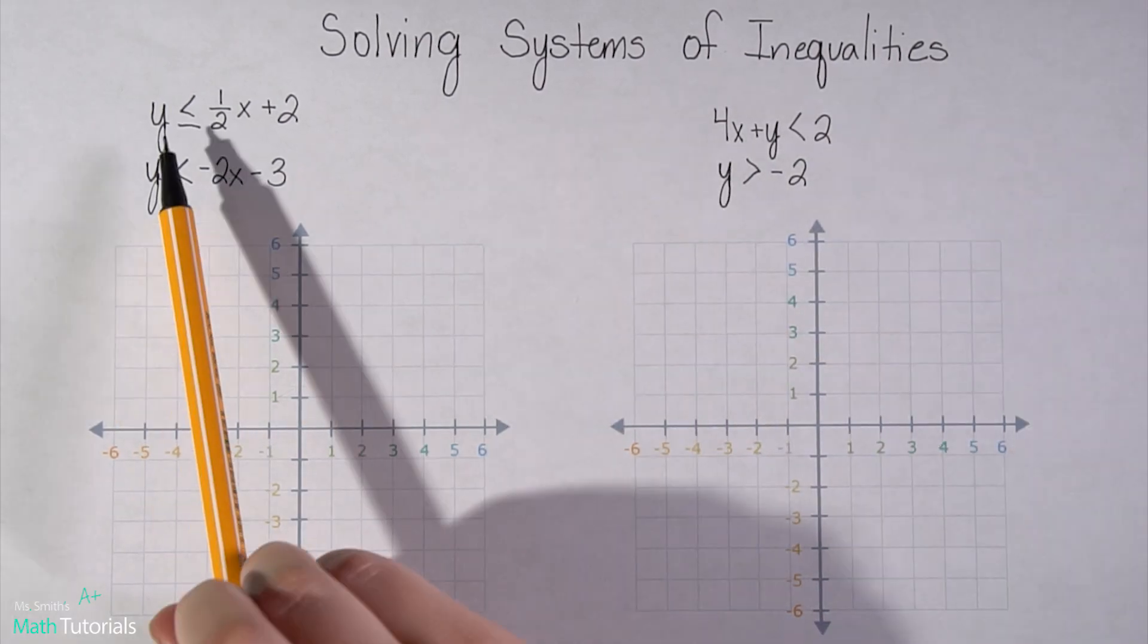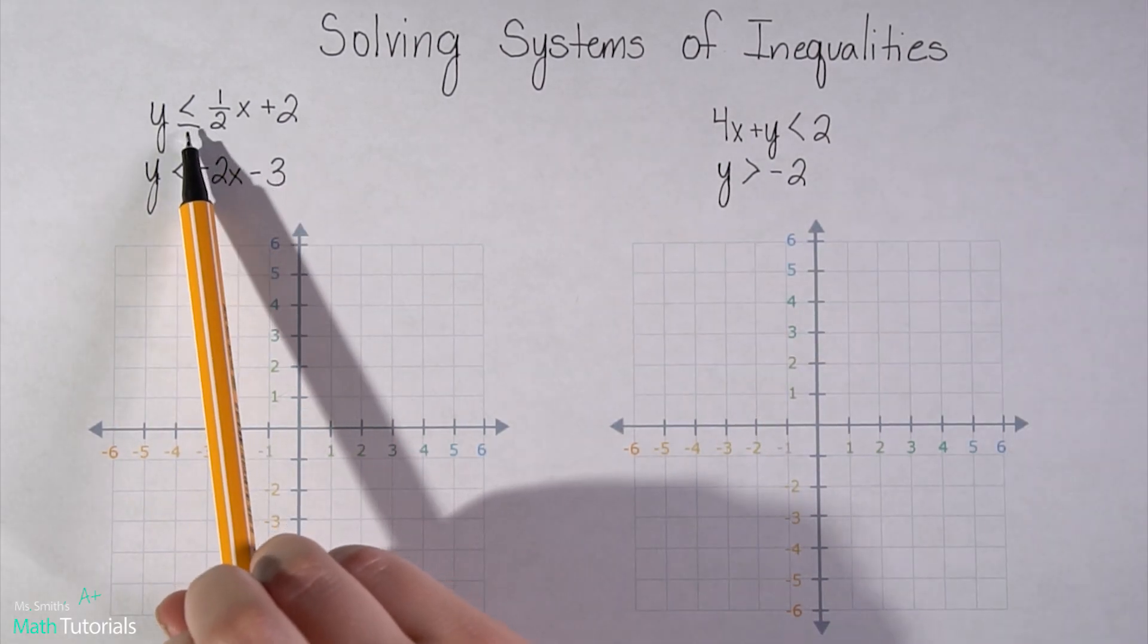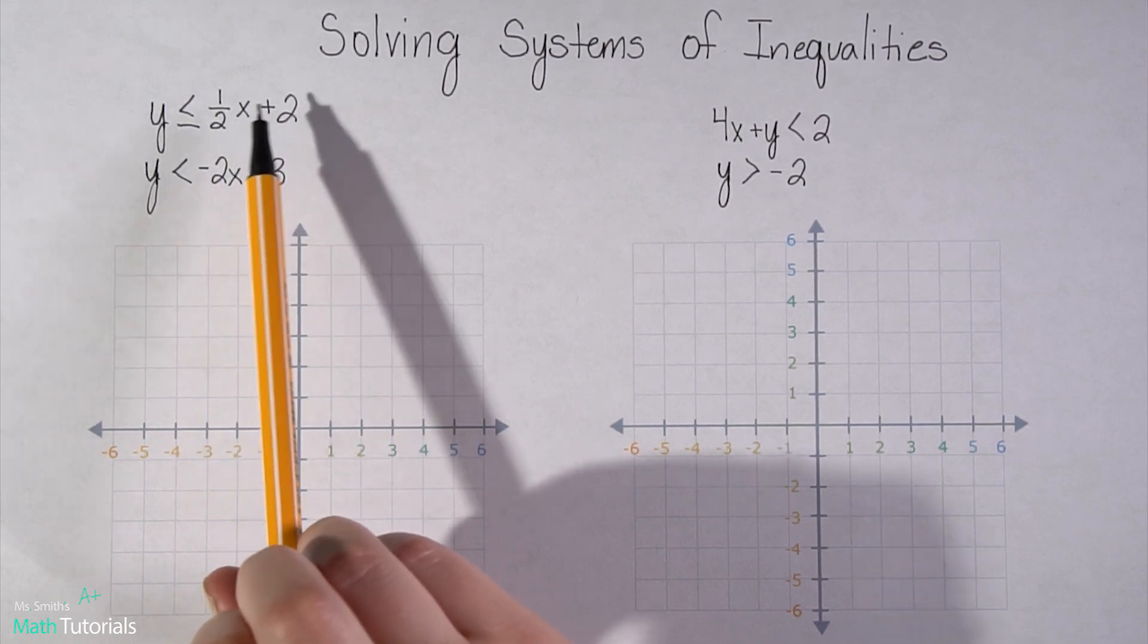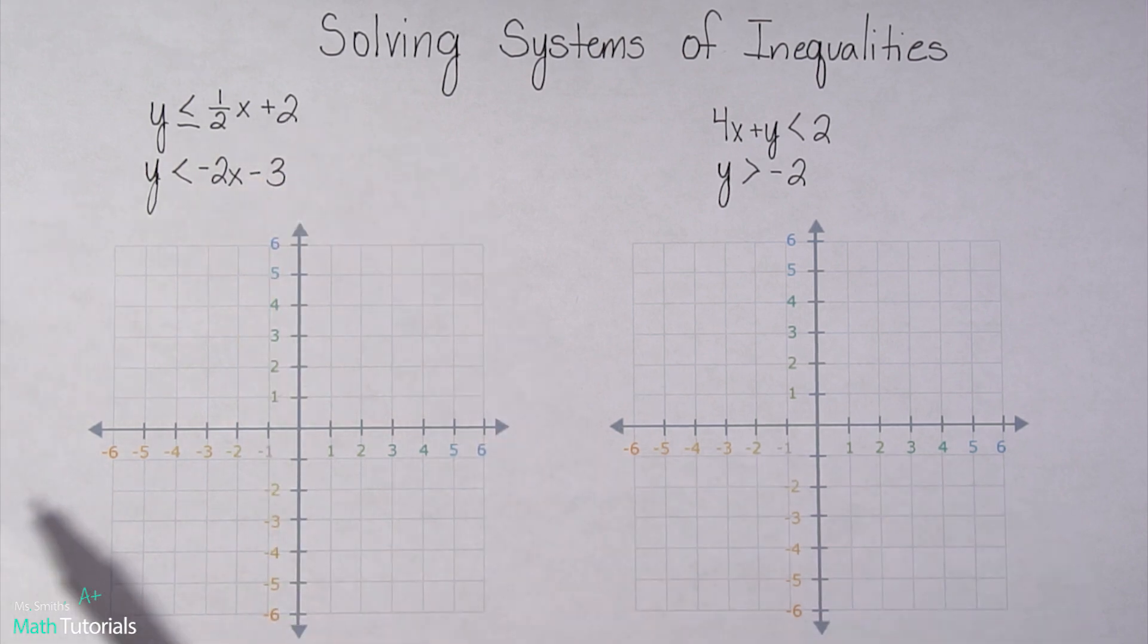So let's look at the first equation. Y equals, now I know that's not an equals, it's an inequality, but we're going to treat it as an equals. So y equals mx plus b. So yes, that first equation is definitely in slope intercept form.